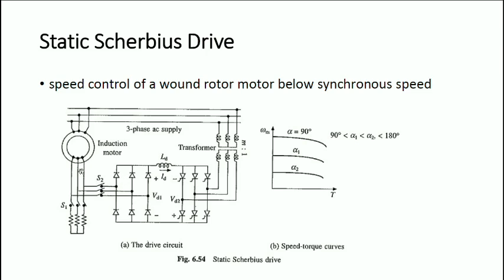The speed control is done in a wound rotor motor. That is why you can see the rotor terminals are taken out. Here we have a resistance, which is for bypass — when you need resistance control you can use that. We are keeping a separate one for when we need an external connection.